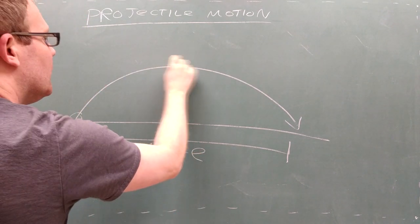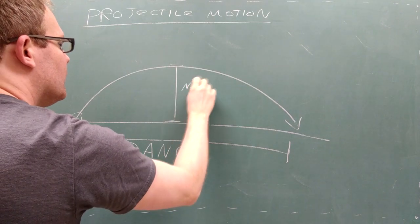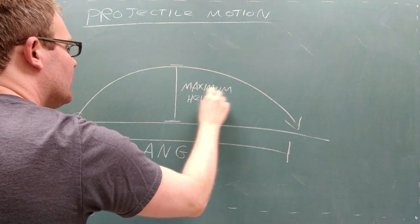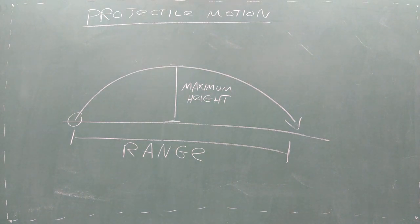Second, we might look at the maximum height of the trajectory. The maximum height is the vertical distance between the starting point and the peak of the trajectory.